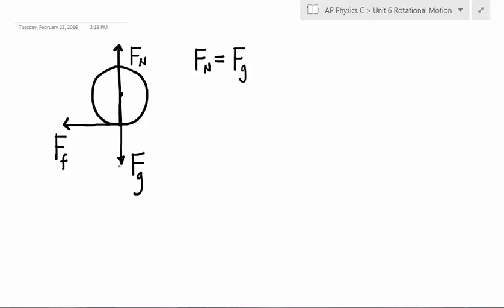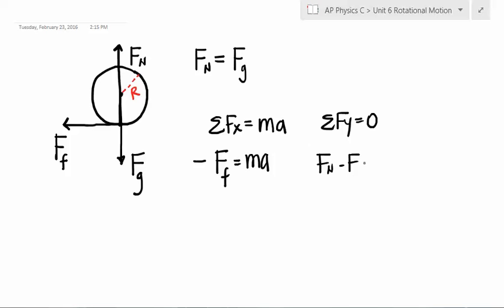And the normal force should be equal in magnitude to the gravitational force because it's not accelerating up or down. Then this thing has a radius capital R. So first part was to use Newton's second law to derive these equations. So let's do that. Let's sum the forces in the x direction. Are the forces in the x direction balanced? No, so it equals ma. What do we have? A negative friction force is equal to ma. What about the y direction? They're balanced. So then the normal force minus the gravitational force is zero.